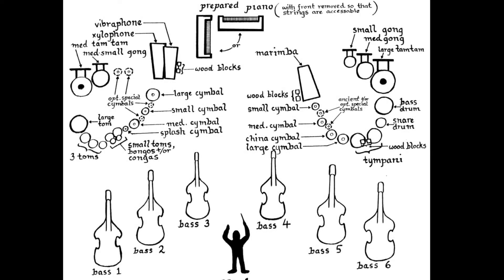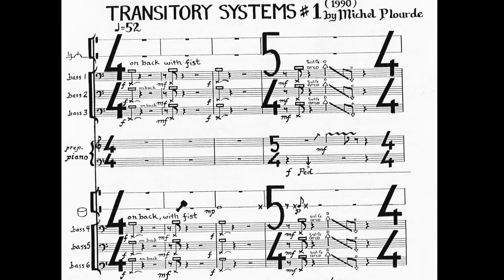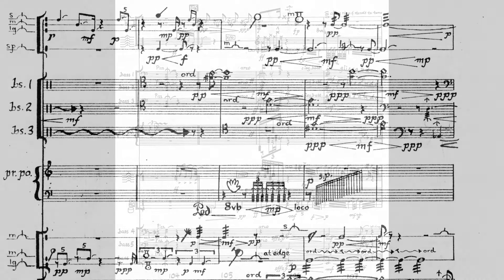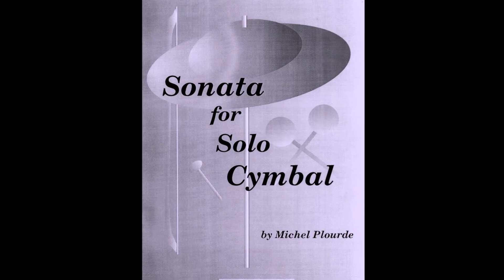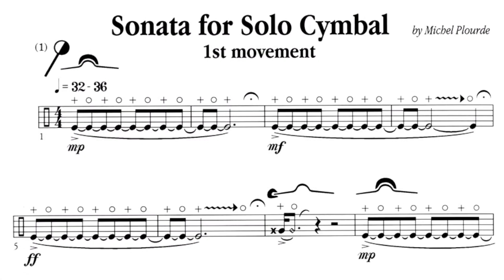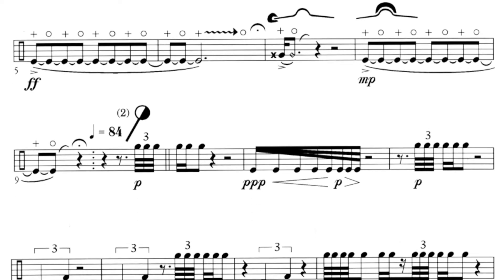I used different forms of notation in the 90s for a couple of different pieces. One was a huge thing I wrote in 1990, called Transitory Systems Number One. I had so many problems with what I wanted to be done on cymbals that I eventually came up with a new notational system for doing specific things on cymbals, which led me to write my Sonata for Solo Cymbal in 1994, which uses a graphic notation that shows the actions to be performed.